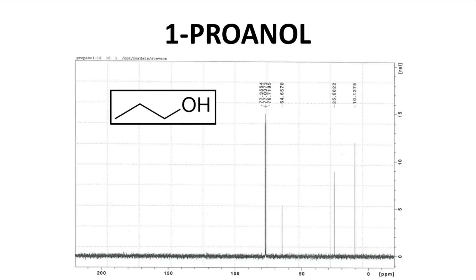Let's start with the spectrum for a very simple molecule, 1-propanol. The solvent for this spectrum was CDCl3, and the carbon of CDCl3 is right here, close to 77 ppm. Propanol has three carbons, each of which is sp3 hybridized.